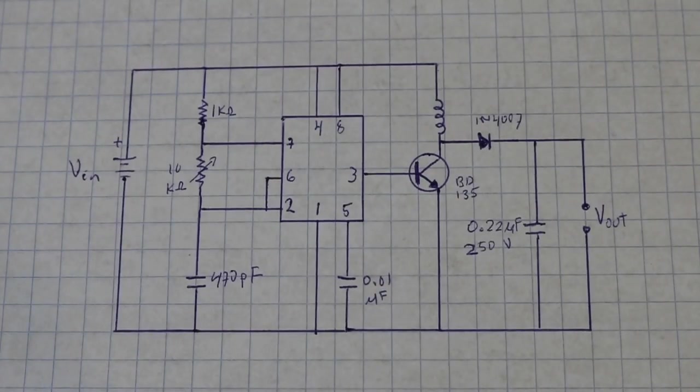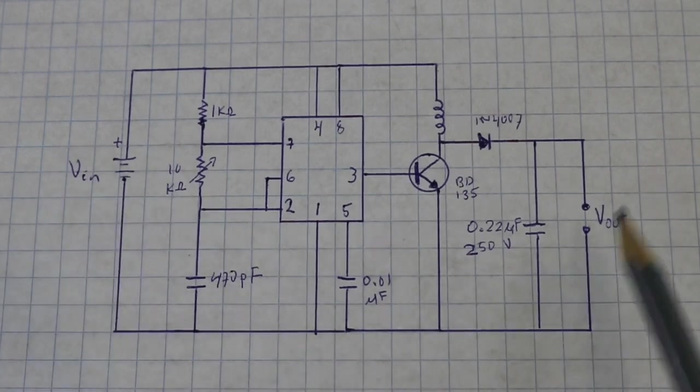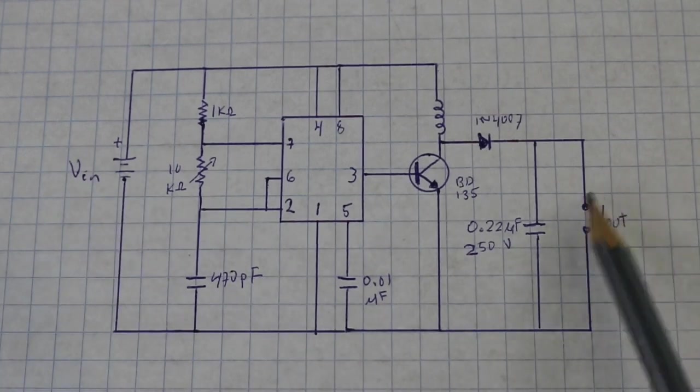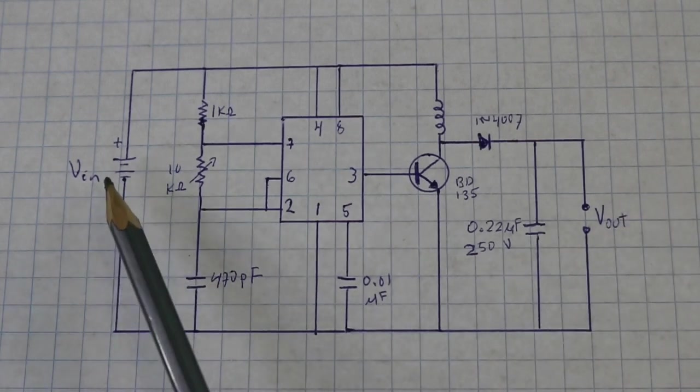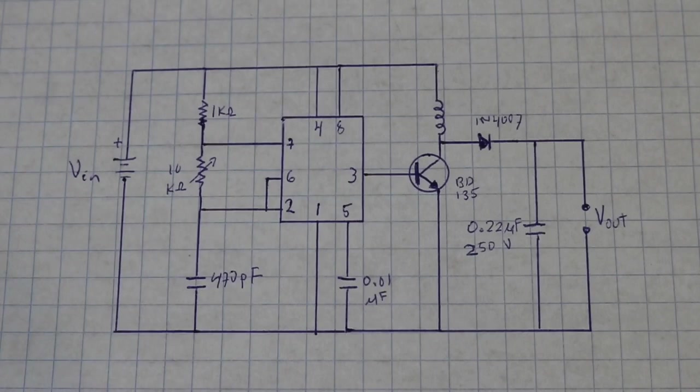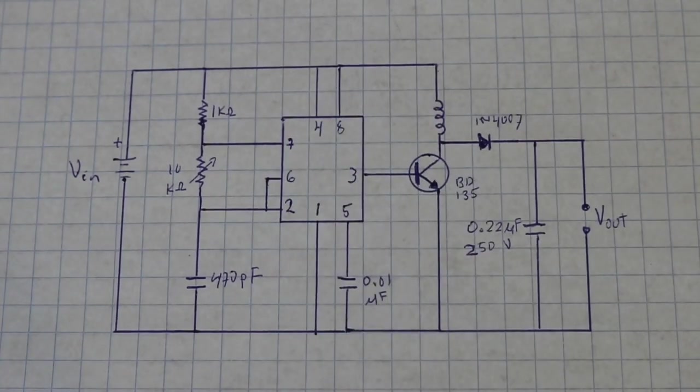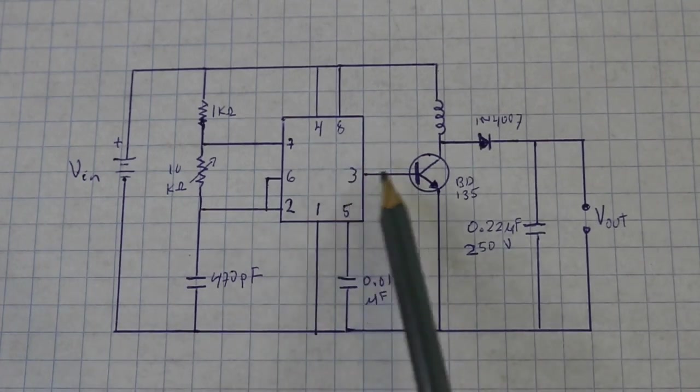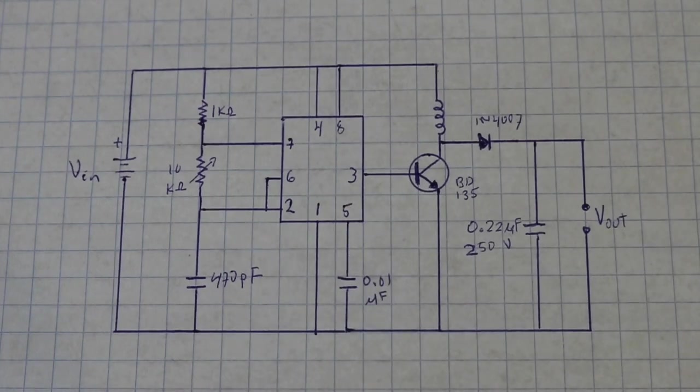This is the circuit. You apply an input voltage and here you obtain an output voltage that will be higher than the applied voltage. The circuit is based on the 555 timer in astable mode. That means that at pin 3 of the timer we obtain a train of rectangular pulses.